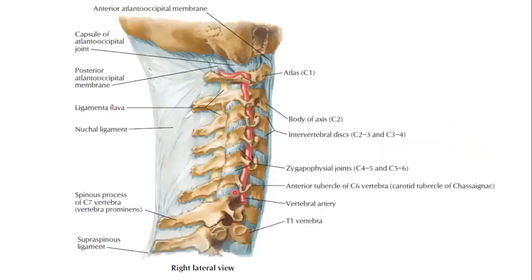Here you can see the foramen transversarium of the vertebrae transmitting the vertebral artery. It does not pass through the C7 foramen transversarium; only C6 to C1 — their foramen transversarium transmit the vertebral artery.